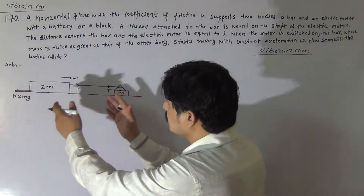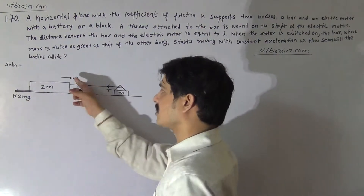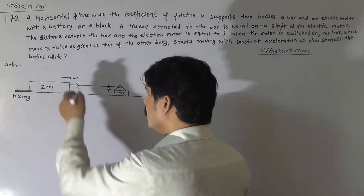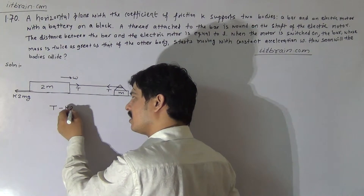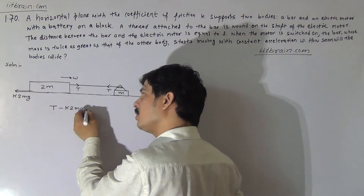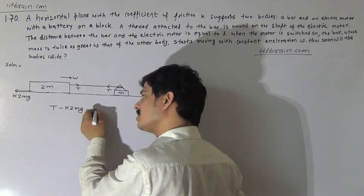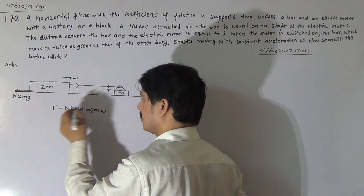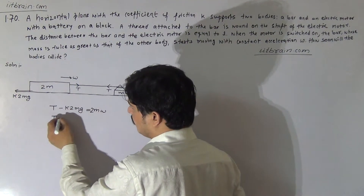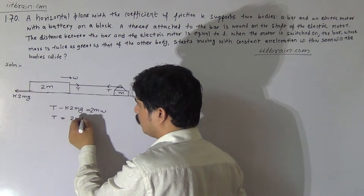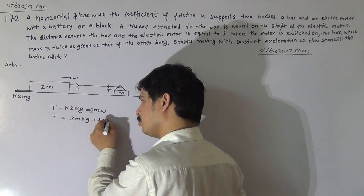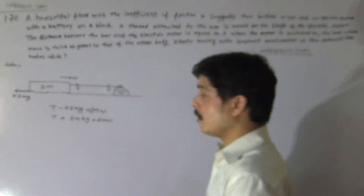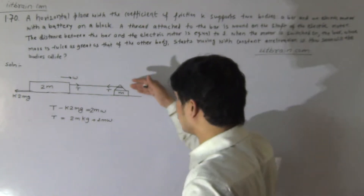So friction by the ground on the body is k × 2mg, and T is the tension in the string. The body is moving with constant acceleration w, so the equation of motion will be: T − k × 2mg = 2m × w. Therefore, the tension in the string is T = 2mkg + 2mw.